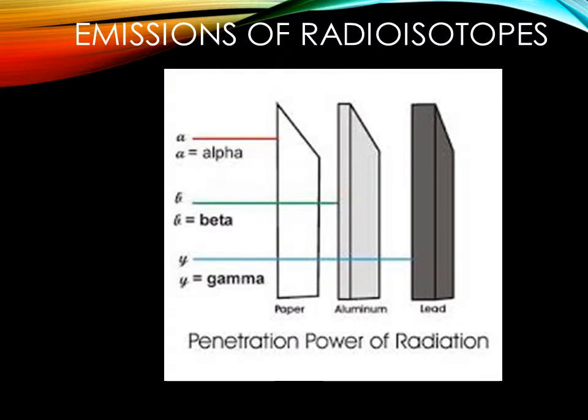Each radioisotope has a different emission. Some of them have more than one. These emissions are gamma, beta and alpha.